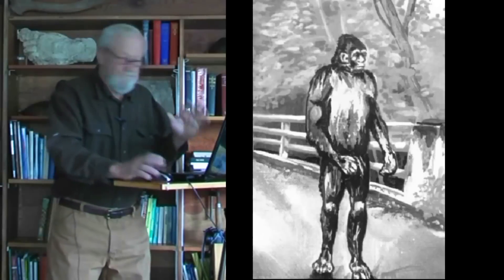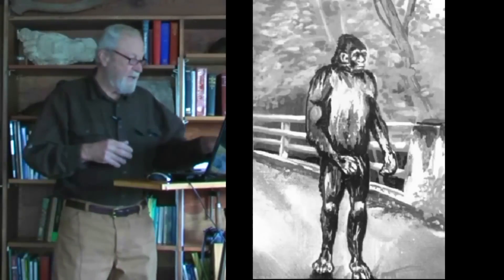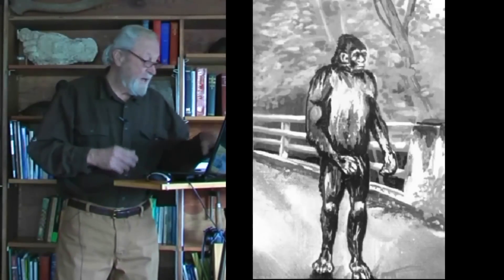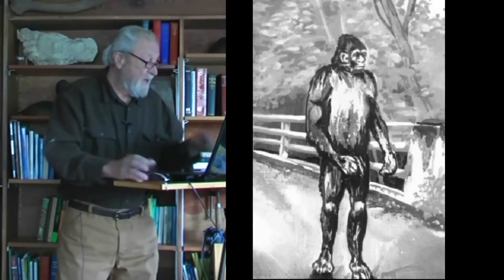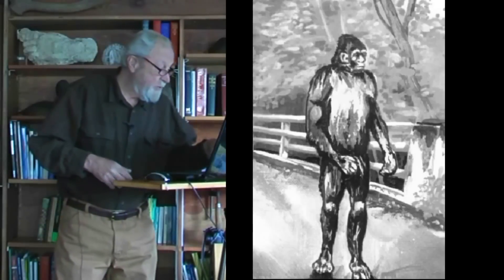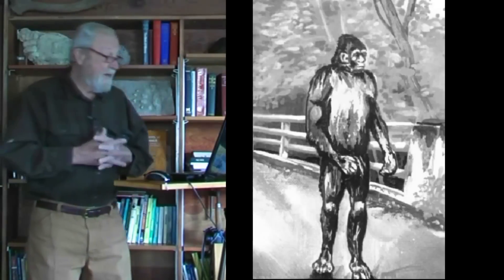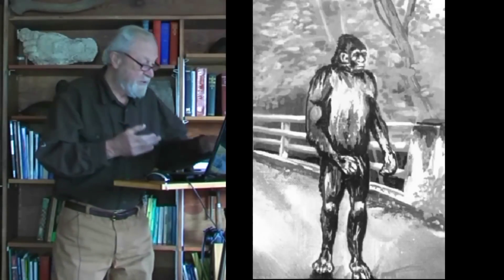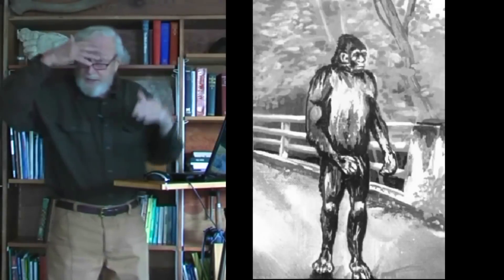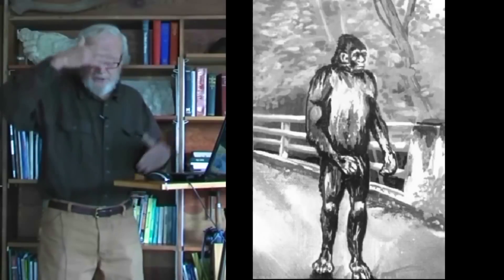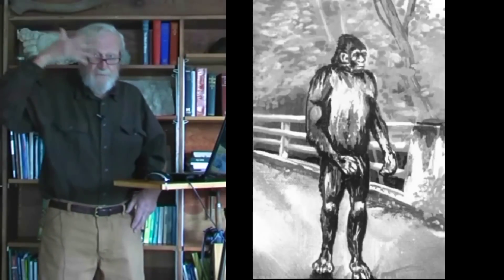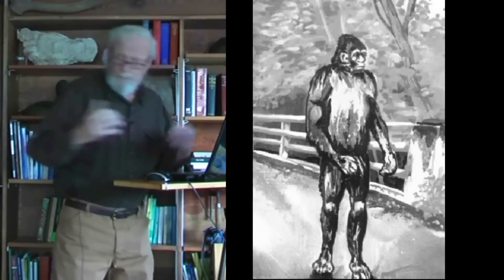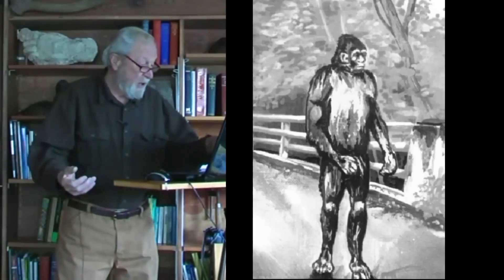One more of these sub-adults or young adults. This one, again from Ohio. This is actually a painting, Ohio 1982, a Sasquatch standing on a bridge. The usual characteristics: the short neck, the tendency towards the pointed head, in this case sloping from receding forehead, and large hands as well as large feet.